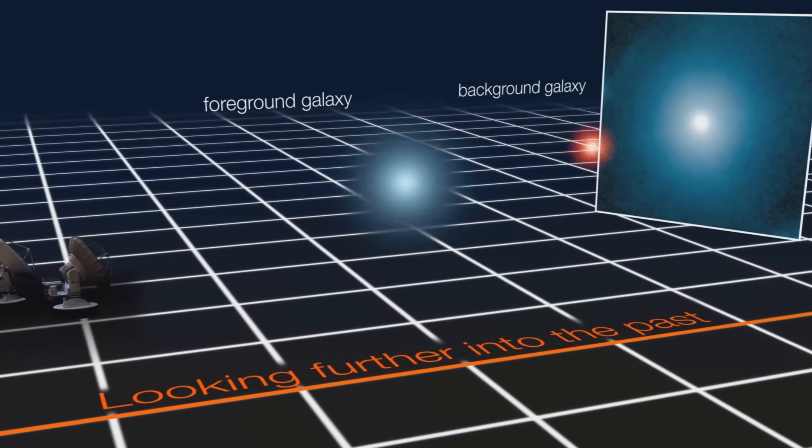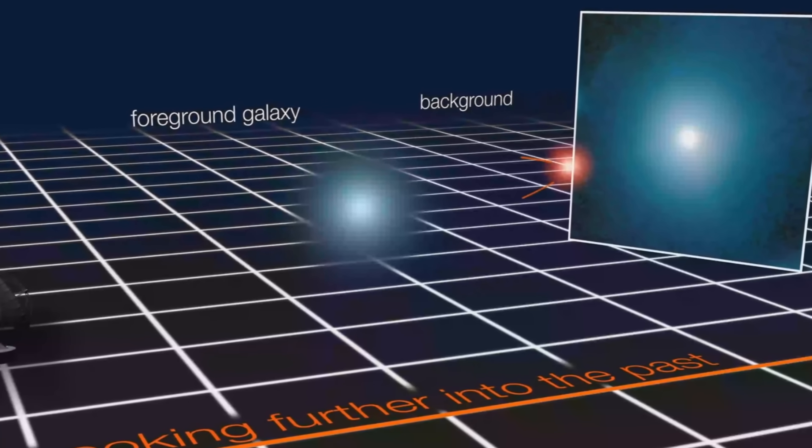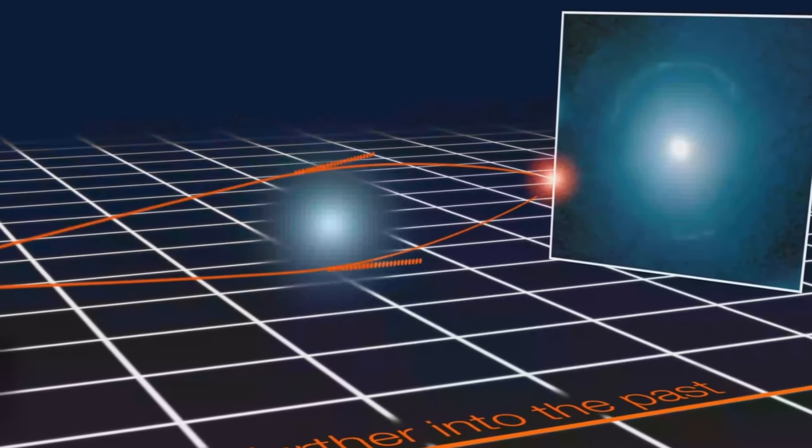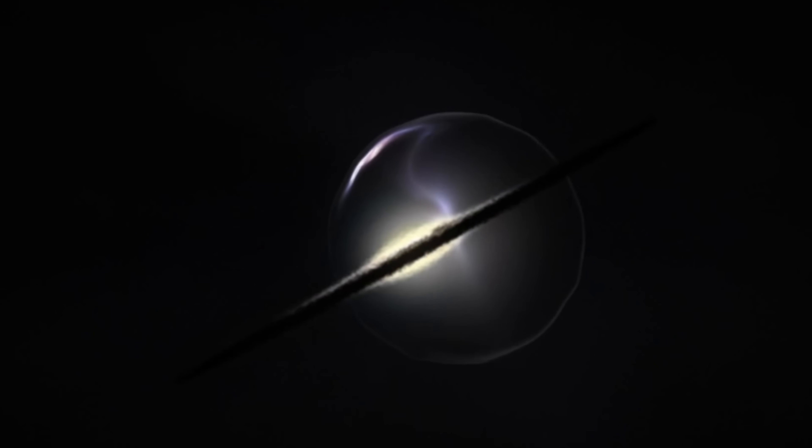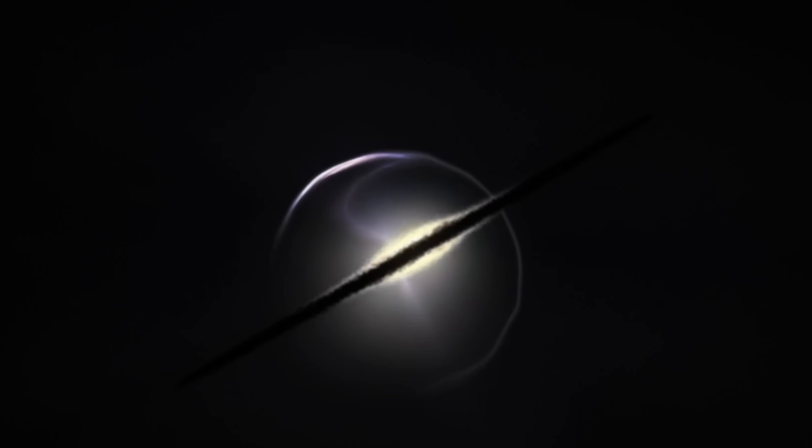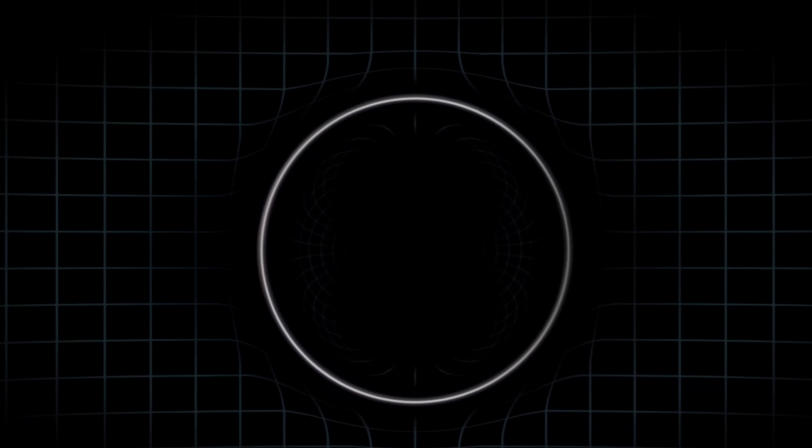And so these Einstein rings, or really anything to do with gravitational lensing, is basically like a treasure for astronomers and cosmologists. And so most of the cosmological secrets will most likely one day be solved by observing a lot of these lenses. And turns out that one telescope has actually been fundamental in discovering so many more. That telescope is the James Webb.